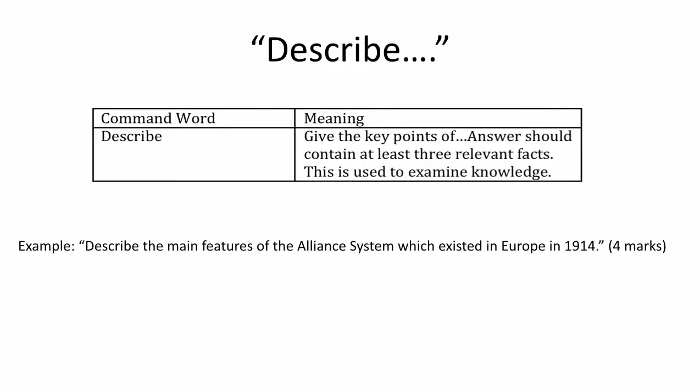Describe. Three relevant facts is pretty reasonable for any lower-order question. For example: 'Describe the main features of the alliance system which existed in Europe in 1914.' This covers the entire year — before or after. You'd announce the central powers alliance system and the Triple Entente, probably best explained during the execution period after Russia mobilized. While 'describe' is relatively factual, you do need to give meaning to it.